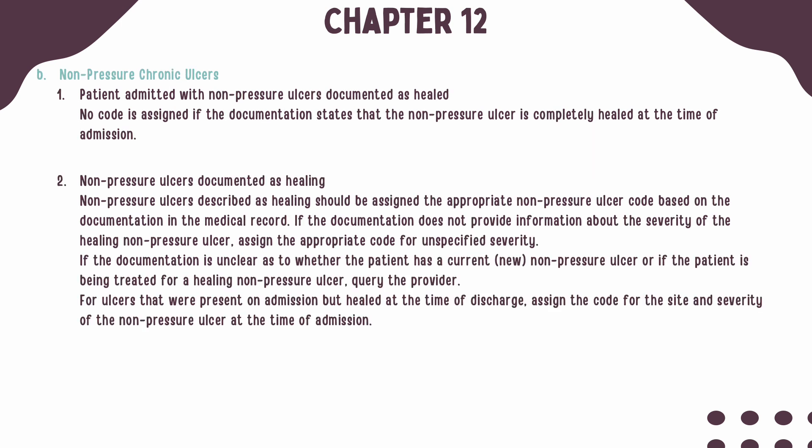Now let's shift focus to non-pressure chronic ulcers. When a patient is admitted or seen for a non-pressure ulcer documented as healed, no code should be assigned. When non-pressure ulcers are described as healing, they should be assigned the appropriate code based on the documentation in the record. If the documentation does not provide information on the severity, assign the code for unspecified severity. If documentation is unclear as to whether the patient has a current or new non-pressure ulcer, or is being treated for a healing non-pressure ulcer, the provider should be queried.